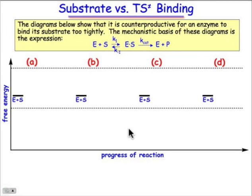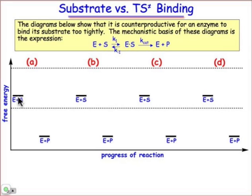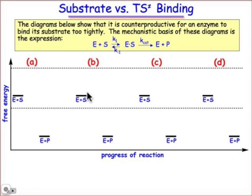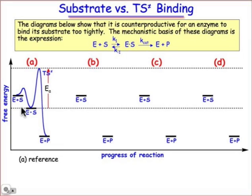We're going to answer that question by looking at reaction coordinate diagrams. We'll plot the progress of the reaction against free energy. We're going to keep fixed the energies of the reactants E and S, and also the energy of the product E plus P. We'll then vary the energy of the enzyme-substrate complex and the transition state leading to it. Cases A through D will be variations on those terms. We'll call A the reference energy, and the activation energy for the reference is governed by E sub A.